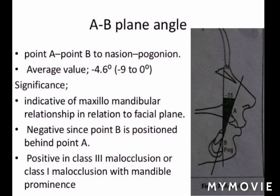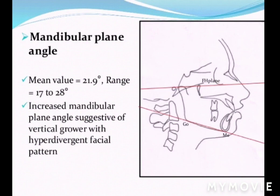Next is the AB plane angle. There is a line joining point A and point B, and another joining nasion to pogonion. The intersection makes an angle known as the AB plane angle. Its average value is -4.6 degrees. It is indicative of the maxillomandibular relationship in relation to the facial plane. It is negative since point B is positioned behind point A, and positive in Class 3 malocclusion or Class 1 malocclusion with mandibular prominence.